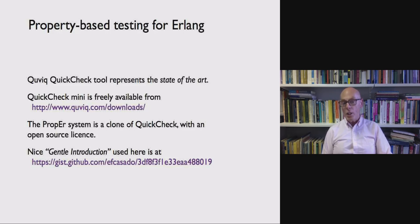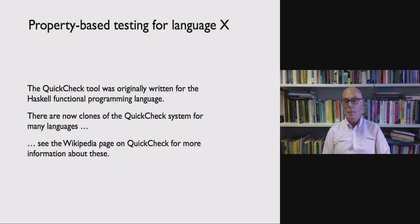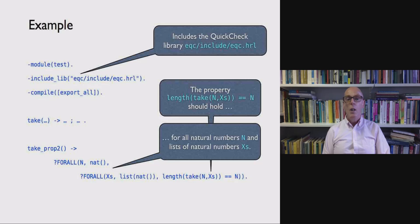Now the Quviq QuickCheck tools represent state-of-the-art of this for Erlang. It's a commercial tool but there's a freely available version called QuickCheck Mini and that's available at the URL you see there. There's also a clone of QuickCheck called PropEr which is available with an open source license. And I've put a link here to a nice gentle introduction to doing property-based testing. Property-based testing was originated for Haskell and ten years on from the paper first being published, it was honored for being the most influential paper at the International Conference on Functional Programming that year. There are clones of QuickCheck for many languages. If you look at the Wikipedia page on QuickCheck you can find out more information about those.